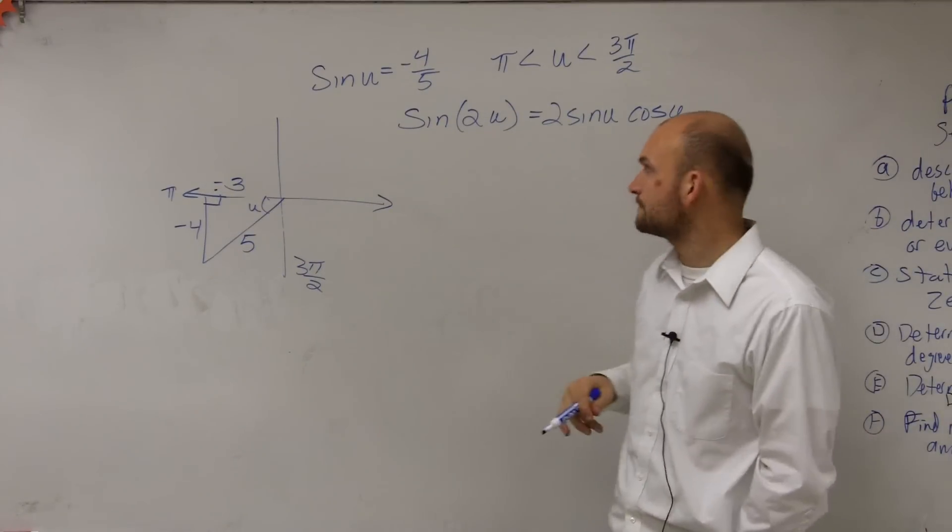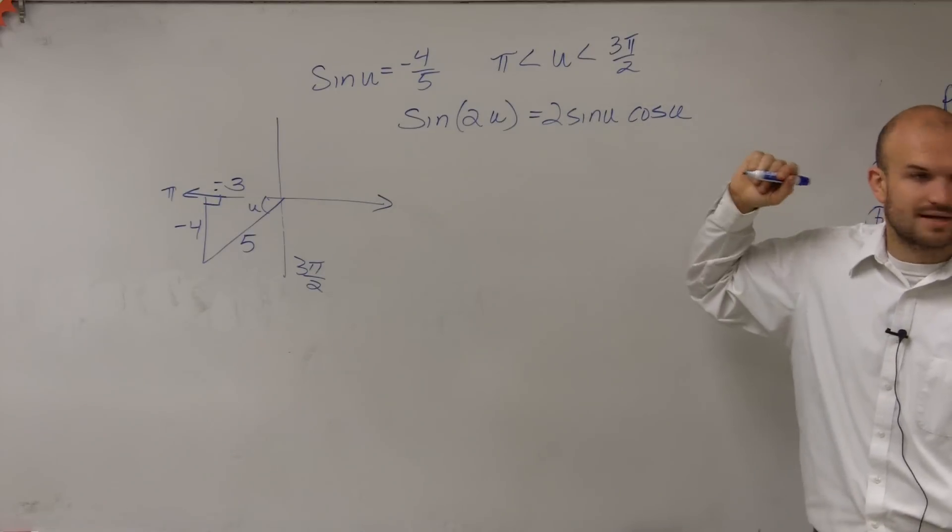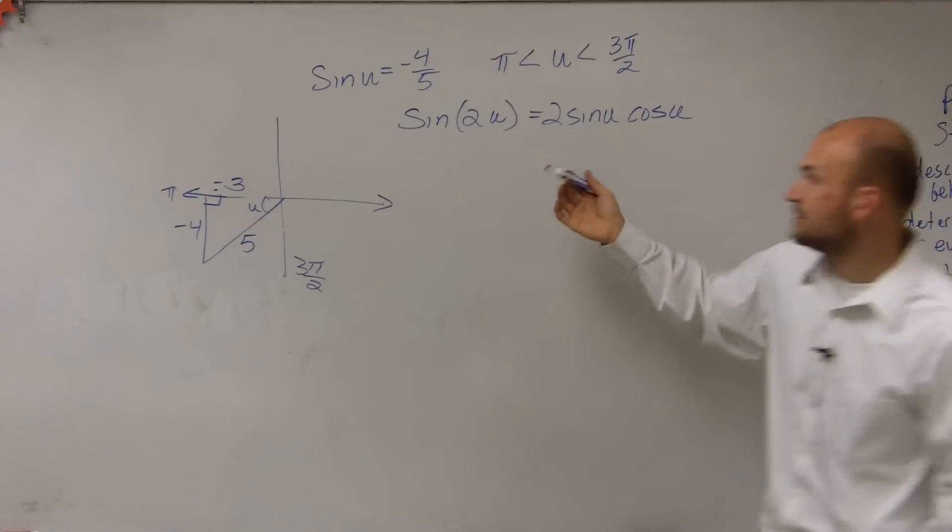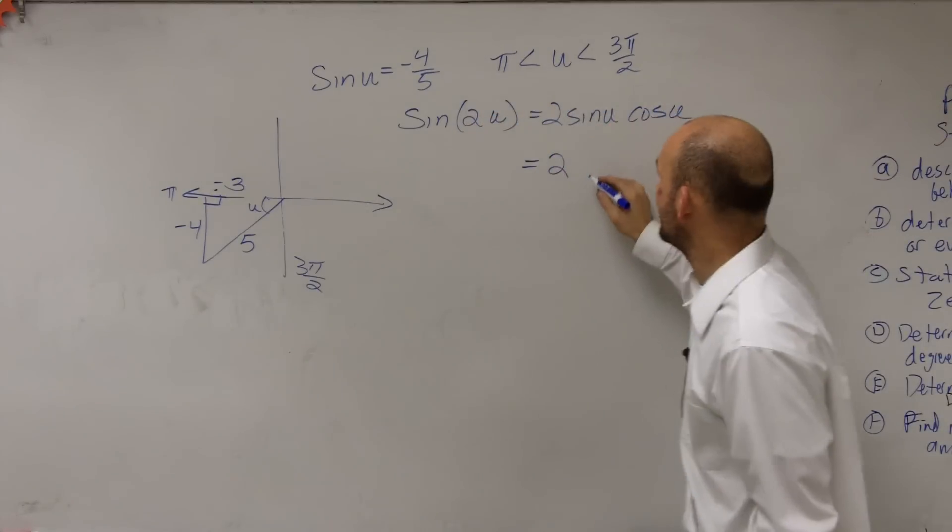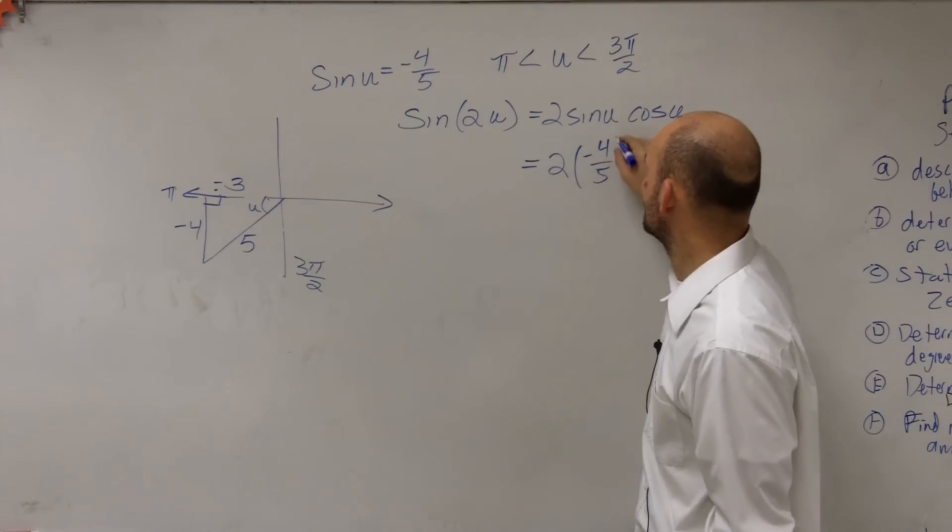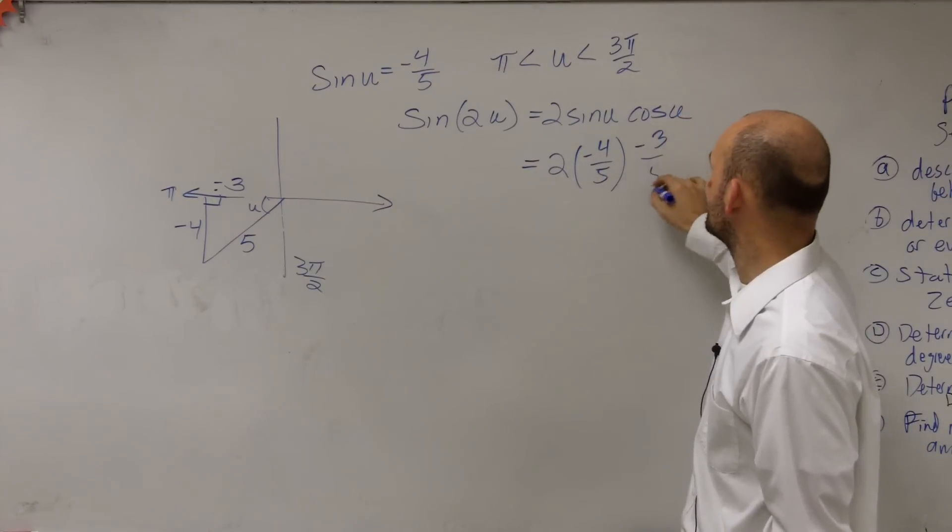Okay. So now all I'm simply doing is now I can evaluate for sine and cosine. Now you're just plugging it into the formula. 2. So the sine is negative 4 over 5. The cosine is going to be negative 3 over 5.